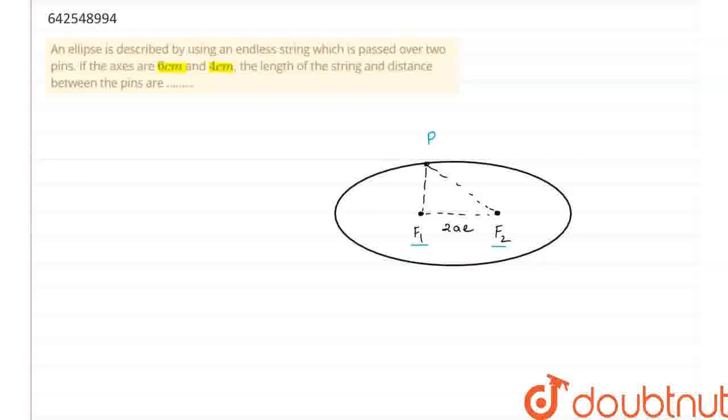Let's write the equation of the ellipse. Here we have two axes. Let 2a is equal to 6 therefore my a is equal to 3 and 2b is equal to 4 therefore my b is equal to 2.